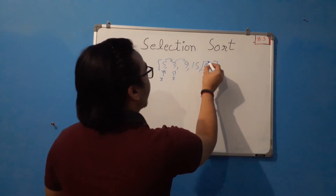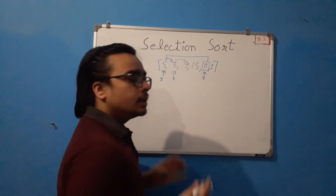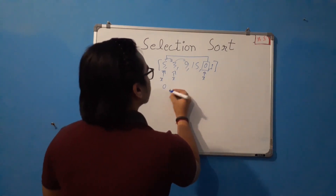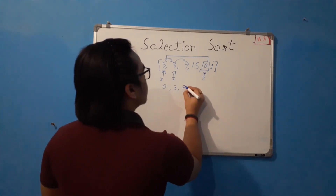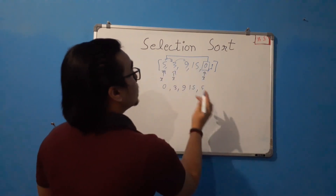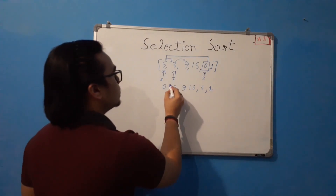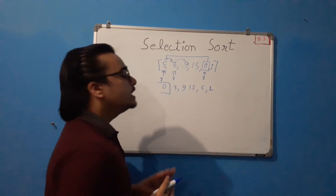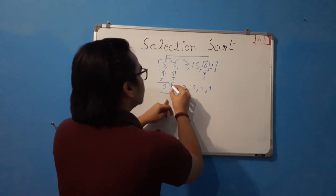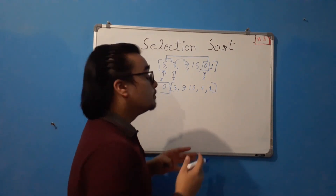This smallest number will be swapped with the first element. The output after the first iteration will be: 0, 3, 9, 15, 5 (because it was swapped), and 1. Now 0 is the sorted part of the list — we don't need to touch this part. We have only the remaining portion, which is the unsorted list, on which we'll now work.